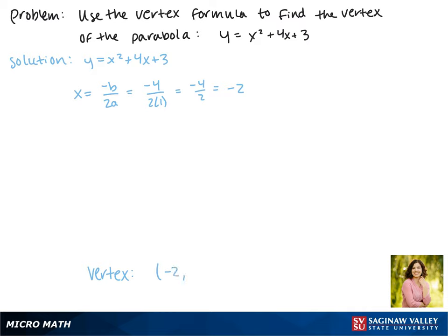To find the y we're going to plug negative 2 back into our equation so we have y equals negative 2 squared plus 4 times negative 2 plus 3.